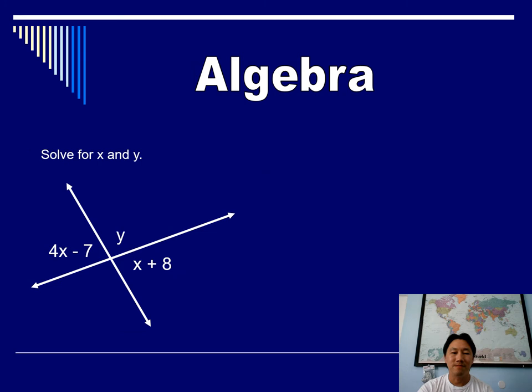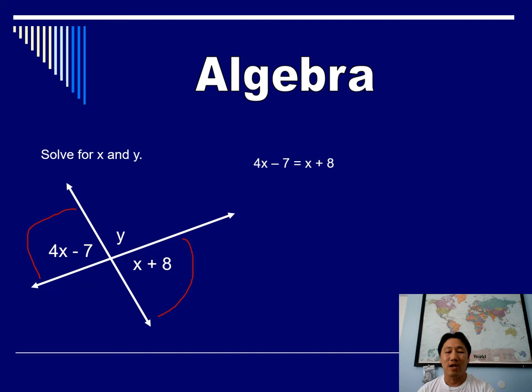Let's do some algebra. This problem says solve for x and y. We start by using vertical angles — they are equal to each other — so we set them equal: 4x minus 7 equals x plus 8. Bring the x's to one side and numbers to the other, then divide, and you get x equals 5.